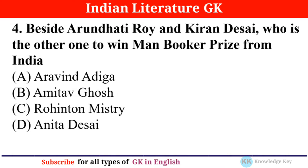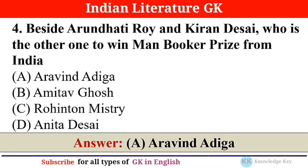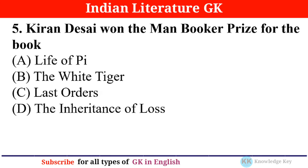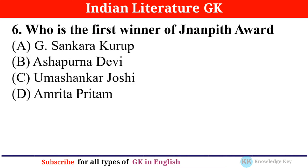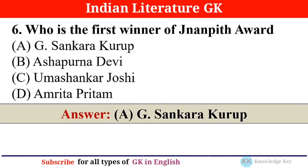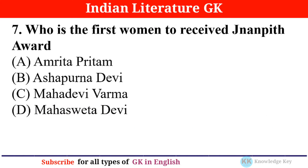Answer A: Arvind Adiga. Question number five: Kiran Desai won the Man Booker Prize for the book — answer D: 'The Inheritance of Loss.' Question number six: Who is the first winner of the Jnanpith Award? — answer A: G. Sankara Kurup.